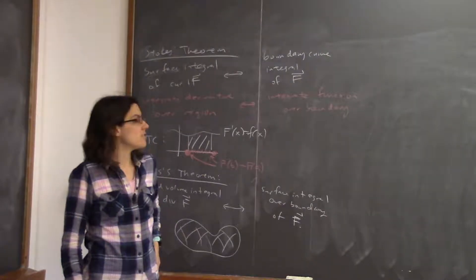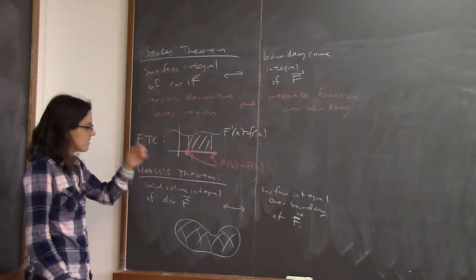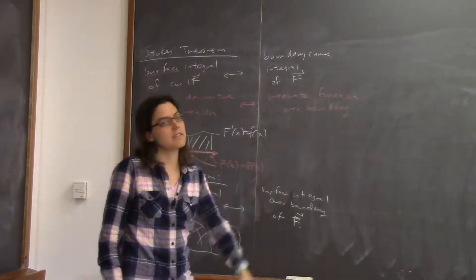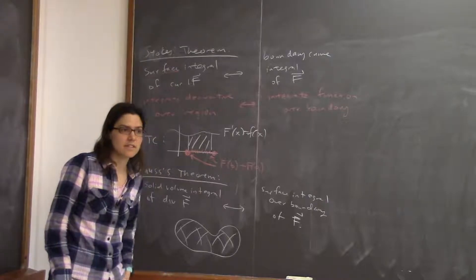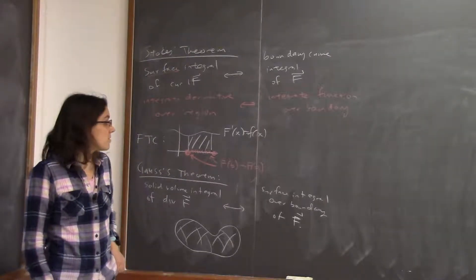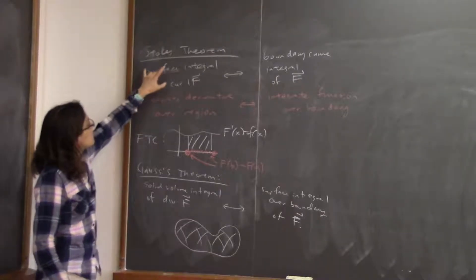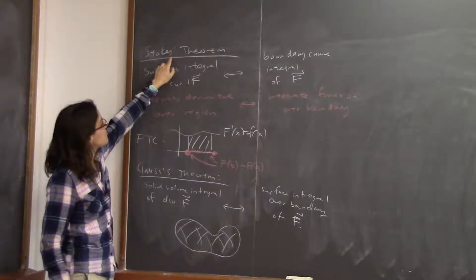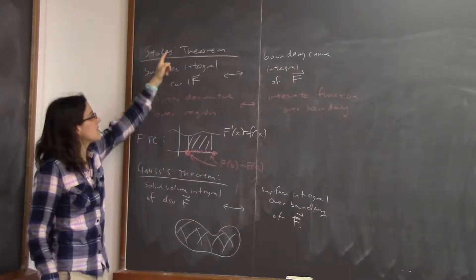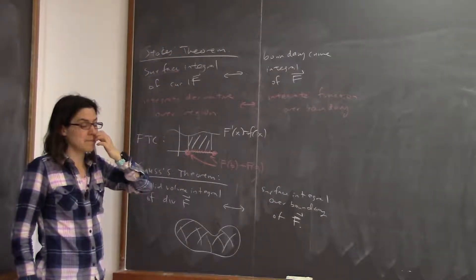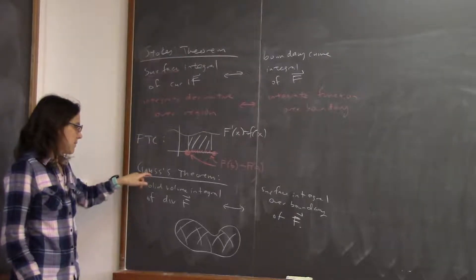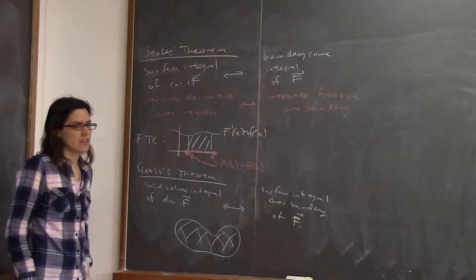We'll get into Gauss's theorem in earnest in a minute, but first let's do another surface integral and Stokes' theorem example. By the way, when you do a possessive on Stokes' theorem, traditionally you just say 'Stokes'' with a silent apostrophe. But when you do Gauss's theorem, you tend to put an extra S. I live with this because my last name also ends with S.